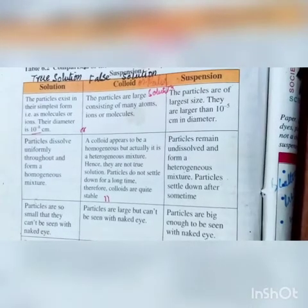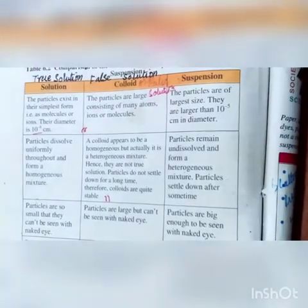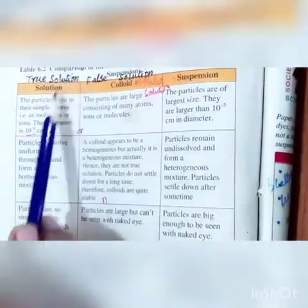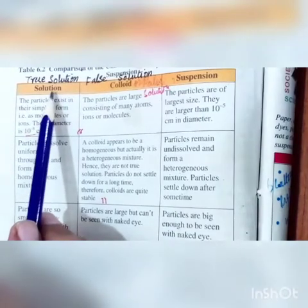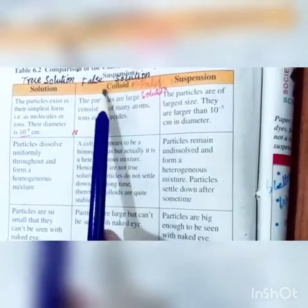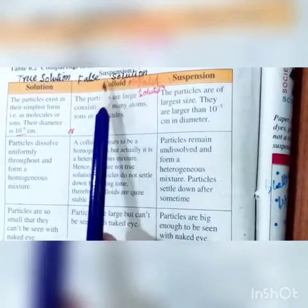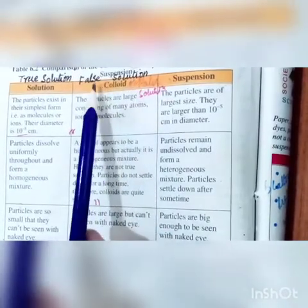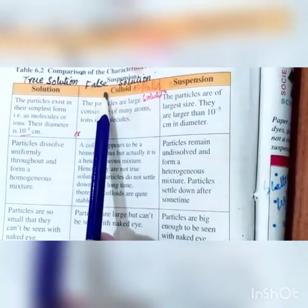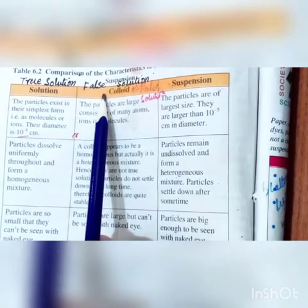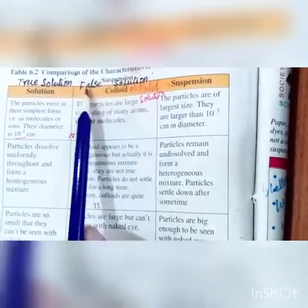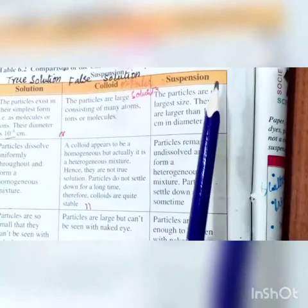Now we will learn the comparison among false solution, true solution, and suspension. First of all, what is a true solution? A true solution is a homogeneous mixture of two or more components. What is a colloidal solution? Colloidal solutions are also called false solutions, in which the solute particles are big enough but cannot be seen with the naked eyes. They look homogeneous but are actually heterogeneous, and they do not settle down for a longer time.